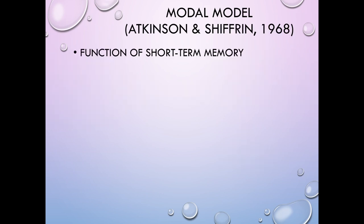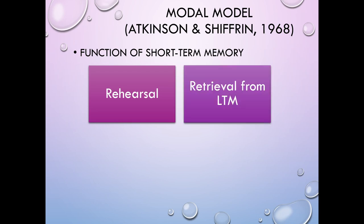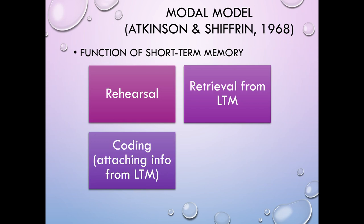Short-term memory gives us a place to rehearse — if you're trying to learn a new song, your short-term memory allows you to go recursively, starting at the beginning and working through the whole thing over and over. It also gives you a place to hold information retrieved from long-term memory so you can think about it, and to attach information you already know to new pieces of information — we call that coding — making the new information more memorable and easier to retrieve later.